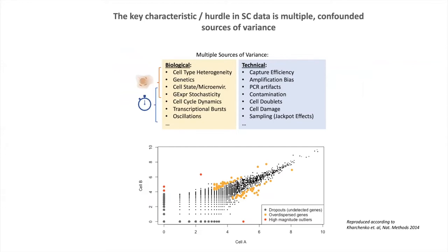If we wanted to summarize in one sentence what is the key characteristic of single-cell data, that sentence would be that single-cell datasets are the result of multiple and often confounded sources of variance. The particular profile of cells in terms of gene count is the result of multiple signals. Part of these signals can be biological — the cell type heterogeneity of your sample, genetics, the specific cell state or microenvironment, gene expression stochasticity, cell cycle dynamics, and other oscillatory behaviors.